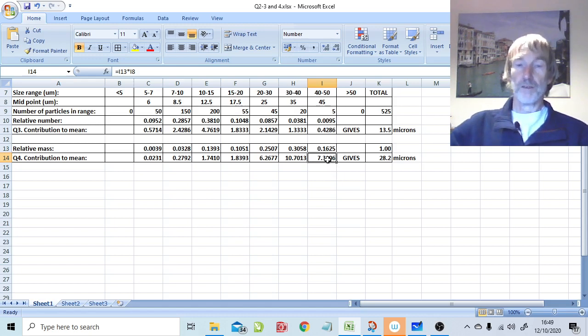So we're back to the important take away message. How big are your particles? Well it depends on how you want to look at them. Do you want to look at them on the basis of a number distribution, gives you 13 and a half microns, or a mass distribution, gives you over 28 microns as the mean value. So it's really important that we don't just talk about mean particle size, we have to specify by mass, by volume, whatever.